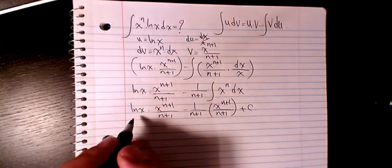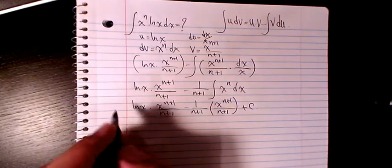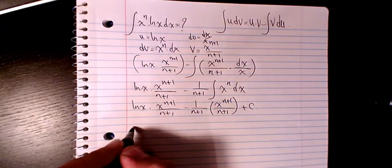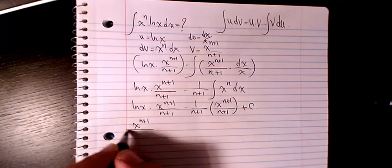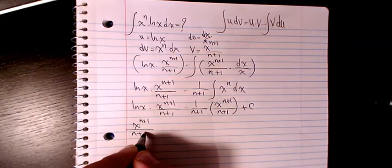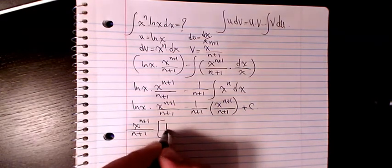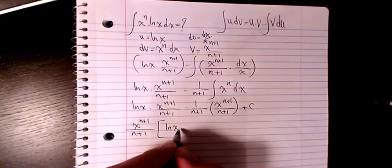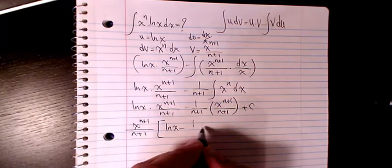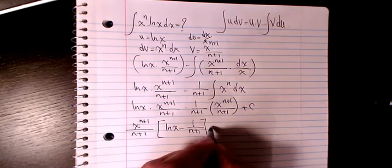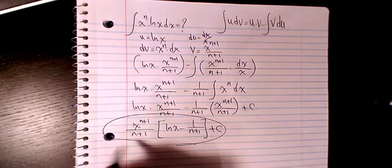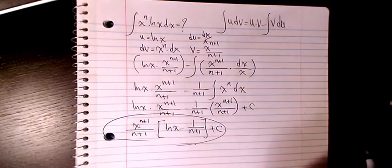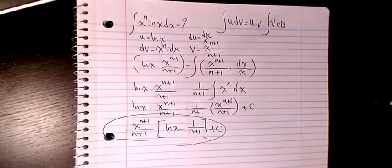Then I will factor out x to the power of n plus 1 divided by n plus 1, giving the final answer: x to the power of n plus 1 divided by n plus 1, times the quantity ln x minus 1 over n plus 1, plus C.